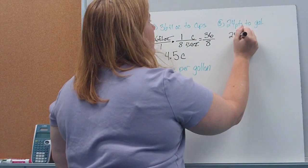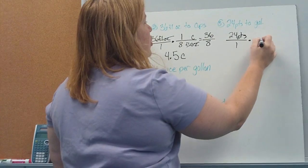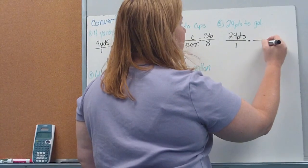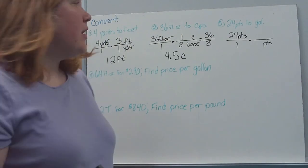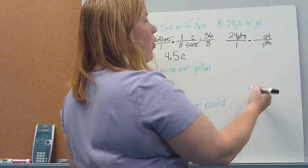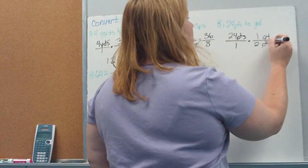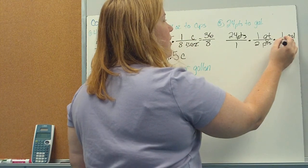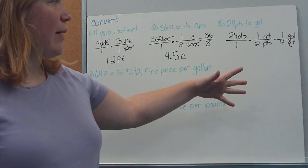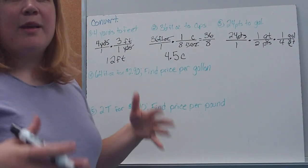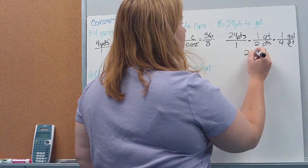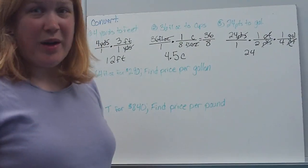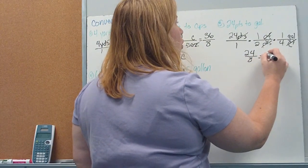Here I've got 24 pints, put over 1, and I want to change it to gallons. Between gallons and pints there are quarts, so I go step by step since I can't think off the top of my head how many pints are in a gallon. To go from pints to quarts: one quart is two pints. Then from quarts to gallons: one gallon is four quarts. My pints and pints cancel, my quarts and quarts cancel, and I'm left with gallons on top and nothing on the bottom — exactly what I wanted. I wind up with 24 over 8, or 3 gallons.